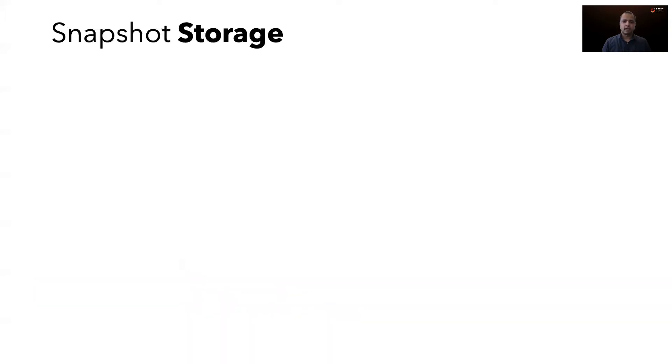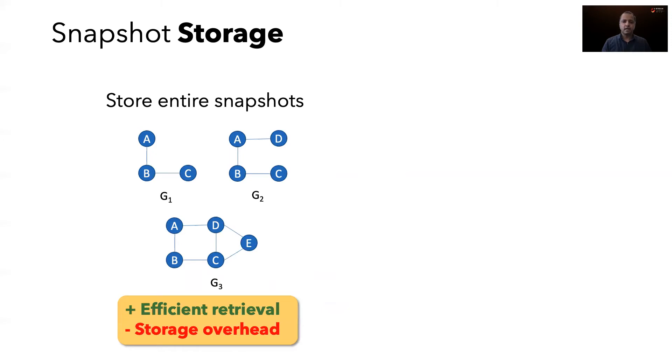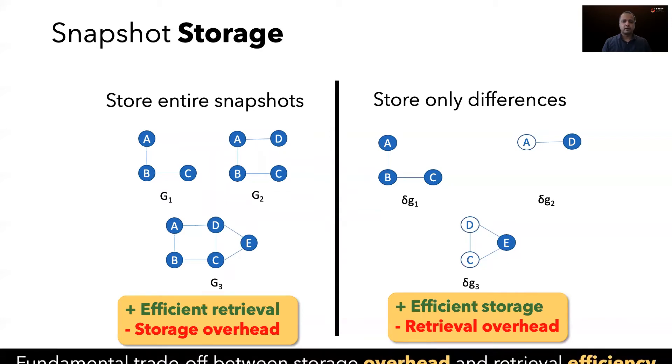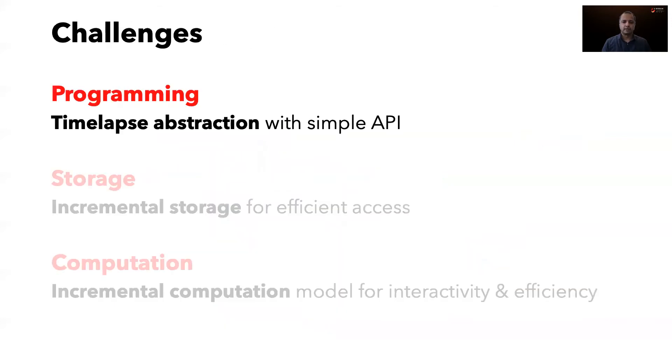There are two options in how a system can store the snapshots in a time-lapse. First is to store the snapshots independently. This is the most efficient in terms of retrieval, but results in duplication of subgraphs that are common among snapshots. The second is to store only the differences over time. In Tegra, this is the most optimal in terms of storage, but to retrieve a snapshot, the system must do computation. Thus, there is a fundamental tradeoff between storage overhead and retrieval efficiency.